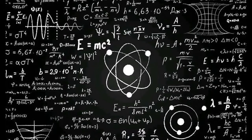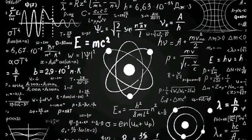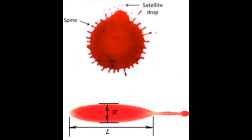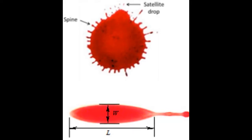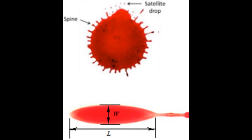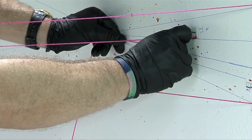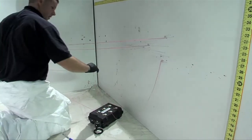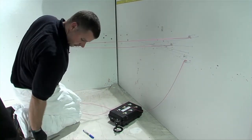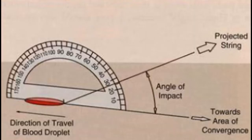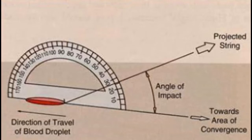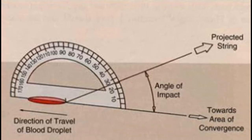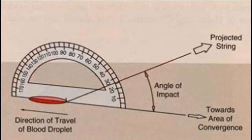Bloodstain pattern analysis is a highly skilled science which requires detailed knowledge of physics and mathematics. By measuring the width and length of the bloodstain, the angle of impact can be calculated, which helps investigators determine the actions that may have taken place at the scene. Once the surface and angle of impact have been identified, crime scene investigators will often use the string method — one of the oldest techniques — placing a protractor at the location of the bloodstain and projecting strings at the angle of impact in the direction of the area of convergence to show the general origin of impact.